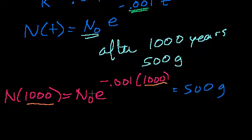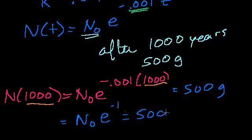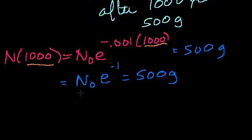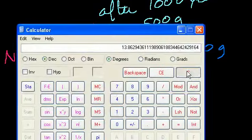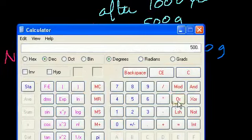So I just have to solve for n sub 0. So what's the e value? So if I have 0.0001 times 1,000, so this is 1,000th of 1,000. So times e to the minus 1 is equal to 500 grams. Or I could multiply both sides by e and I have n sub 0 is equal to 500e, which is about 2.71. So that's 500 times 2.71. I don't actually have e on this calculator. At least I don't see it.